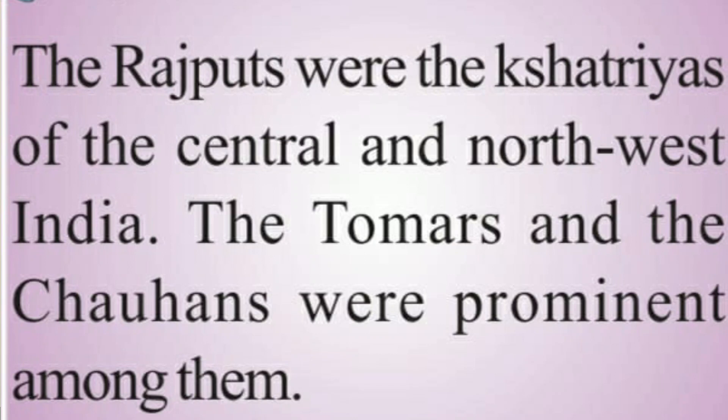After the Tomar kings, there came the Chauhans, who were prominent Rajputs. Prithviraj Chauhan was the last king of the Chauhan dynasty. After that, Muhammad of Ghori, from present-day Afghanistan, defeated Prithviraj Chauhan and established his domination in Delhi. After his death, his commander-in-chief, Qutbuddin Aibak, established his rule in Common Era 1206.